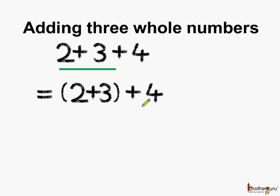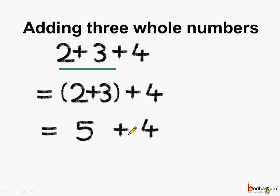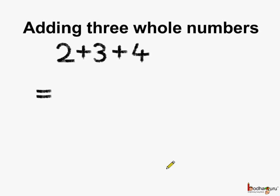Then we will add four. Adding two plus three first, we get the answer as five. Now we will add four to it. So we get five plus four is equal to nine. Let us group three and four now and do the addition.